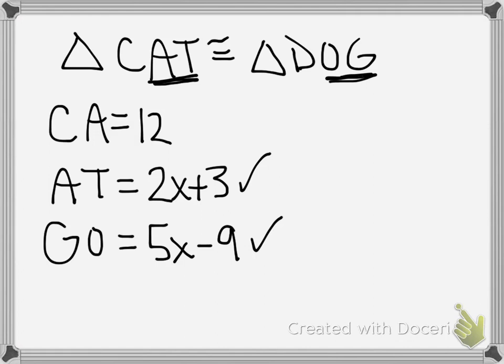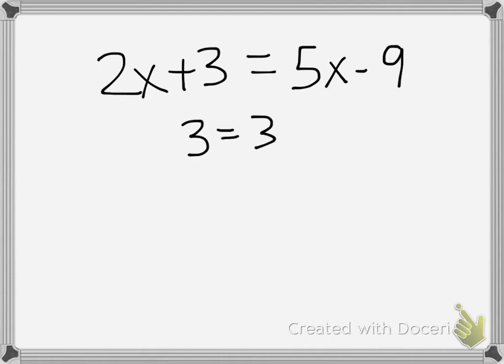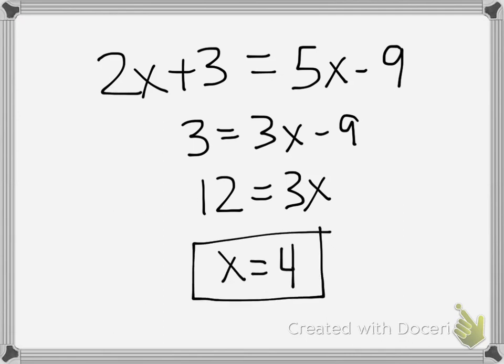And so those things are congruent. So to solve for x, all I need to do is I need to take those two measurements, which were 2x plus 3 and 5x minus 9, and I need to set them equal to each other. Subtract 2x from both sides, you get 3 is equal to 3x minus 9. Add 9, you get that 12 is equal to 3x. And when you divide by 3, you get that x is equal to 4.